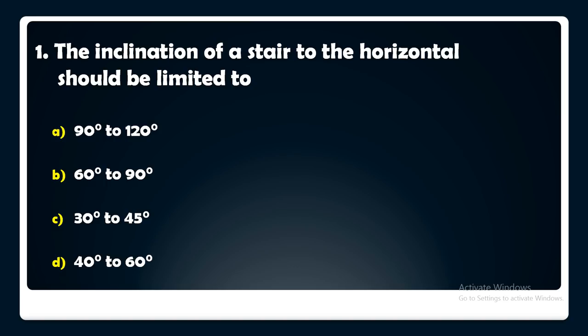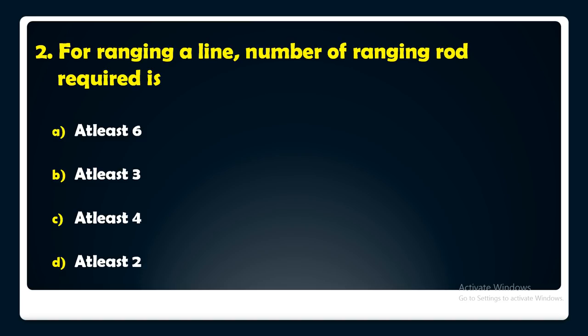For ranging a line, the number of ranging rods required is — at least 6, at least 3, at least 4, or at least 2. The answer is: for ranging a line, the number of ranging rods required is at least 3.